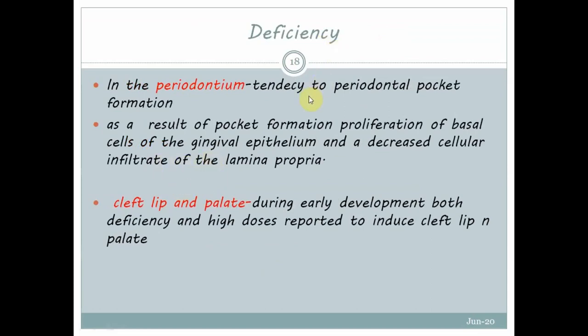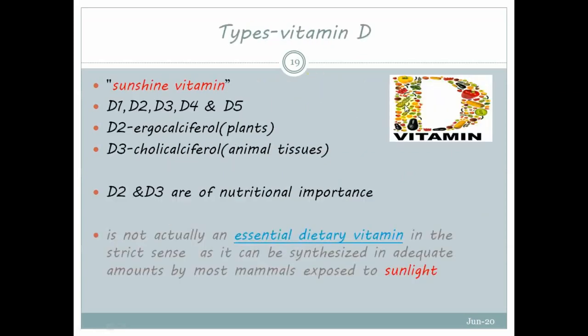Vitamin A deficiency also impairs normal teeth spacing and osteoblast function of alveolar bone. In the periodontium there is a tendency to periodontal pocket formation, with proliferation of basal cells of gingival epithelia and decreased cellular infiltrate in the lamina propria. Both deficiency and high doses of vitamin A have been reported to induce cleft lip and palate during early development.